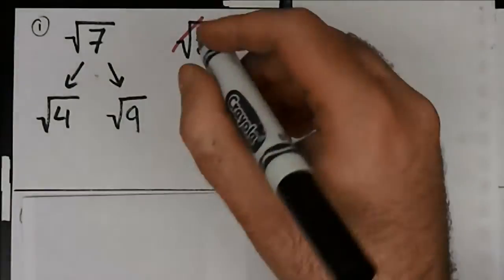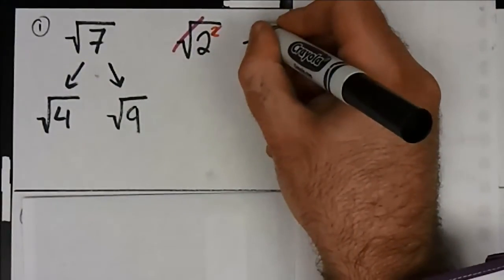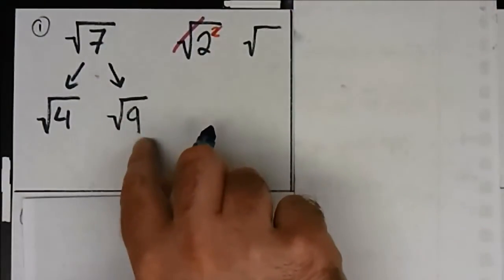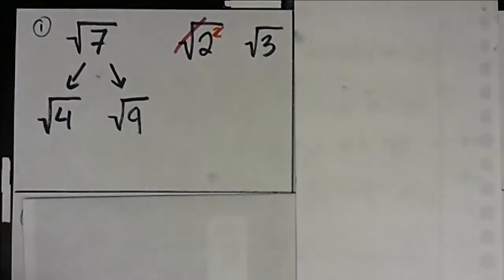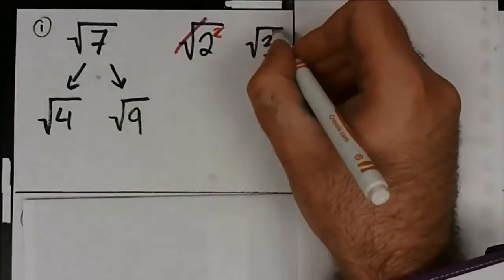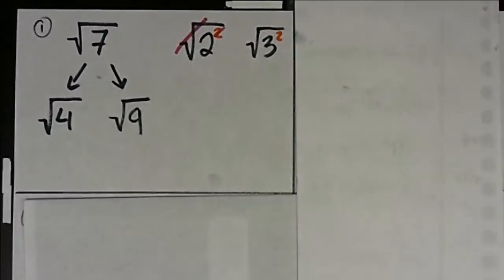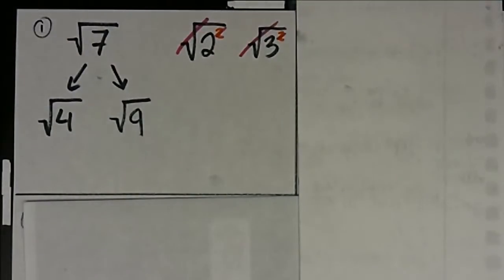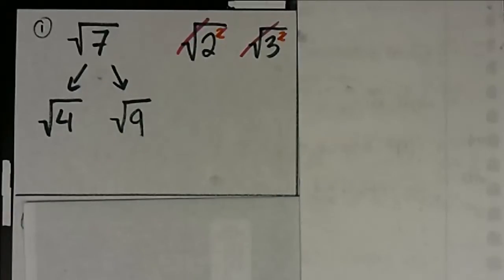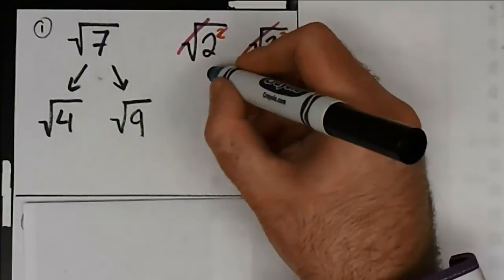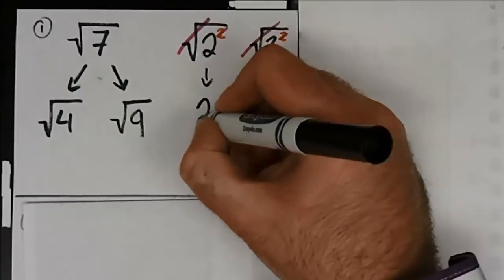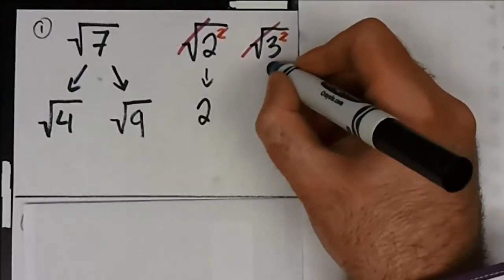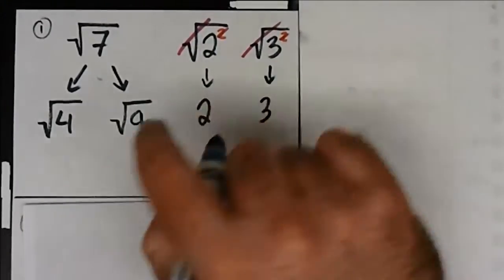I can do the same thing for 9. I can write 9 in its exponential form, which is 3 squared. Again, I can cancel out the radical and the exponent because they're the same power. That leaves me with just two square root answers: 2 for the 4, and 3 for the 9.